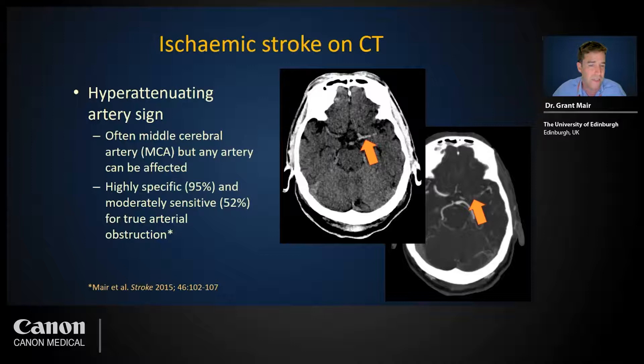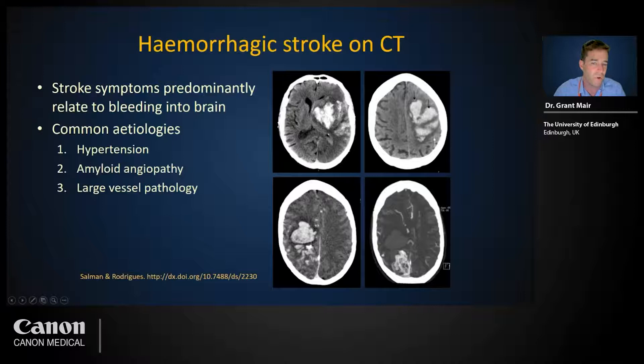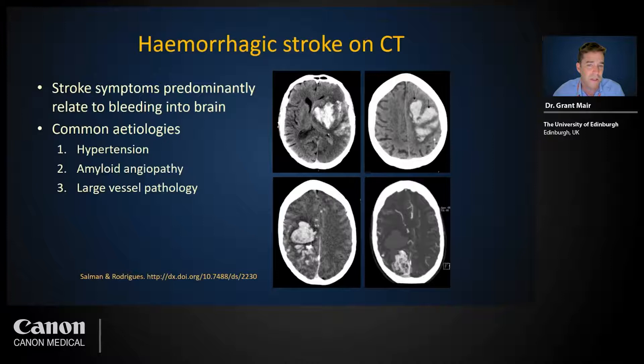Stroke caused by hemorrhage is usually more easily seen in the earliest stages — note the dense or hyper-attenuating blood on these images. There are three common non-traumatic causes of spontaneous bleeding: uncontrolled hypertension, typically causing bleeding into deeper structures such as the basal ganglia or brain stem; amyloid angiopathy, typically causing lobar bleeding with finger-like extensions into the gyri and sulci; and underlying vascular abnormality such as an arteriovenous malformation. Ruptured aneurysms can also be considered here.